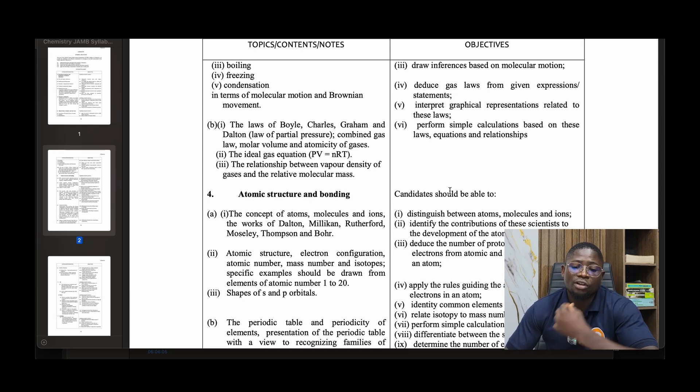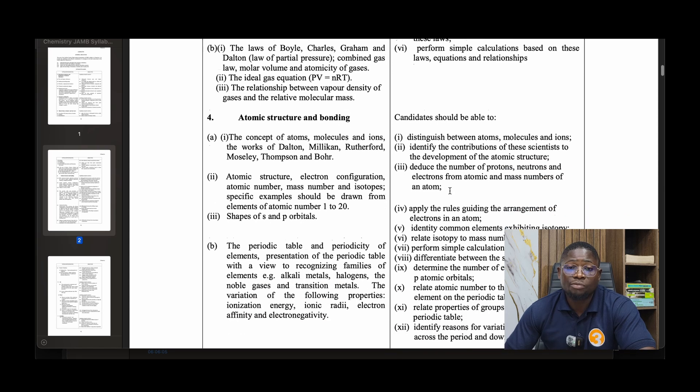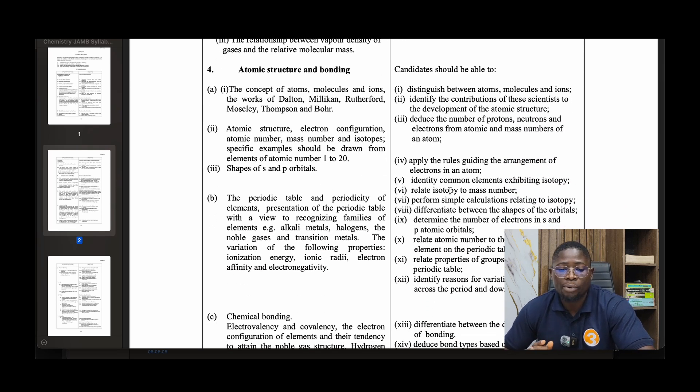Then we'll look at the laws of Boyle, Charles, Graham, and Dalton's law of partial pressure, combined gas law, molar volume and atomicity of gases, the ideal gas equation PV equals nRT, and the relationship between vapor density of gases and relative molecular mass. Number four: Atomic structure and bonding, the concept of atoms, molecules and ions, the works of Dalton, Millikan, Rutherford, Moseley, Thompson, and Bohr.